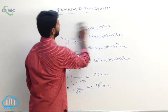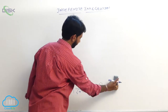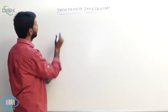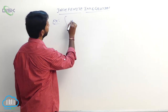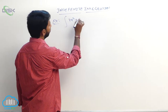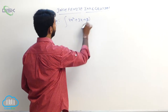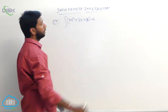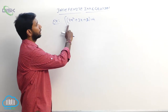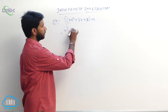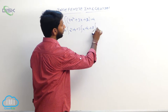Now go to some examples. Suppose the integral of a polynomial expression — 4x² + 3x + 2 — dx. We separate into individual integrals: 4 times integral of x² dx, plus 3 times integral of x dx, plus 2 times integral of 1 dx.